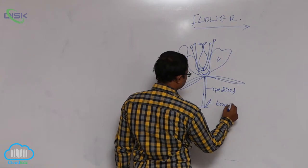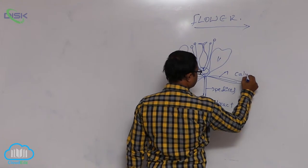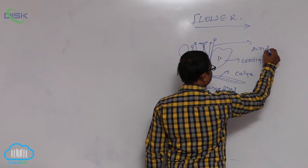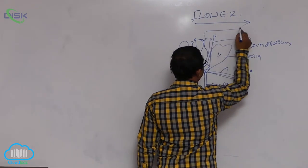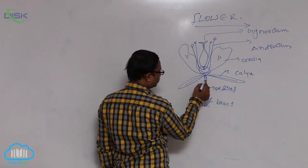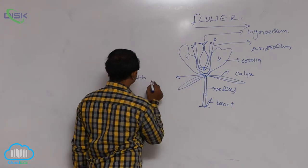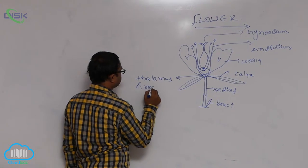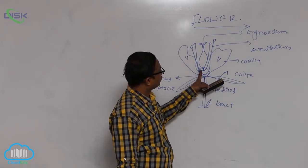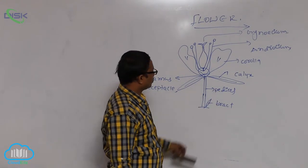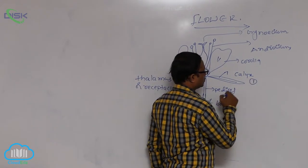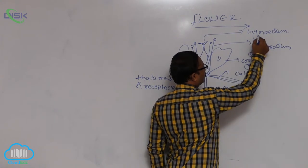In the diagram, we can see the bract, peduncle, calyx, corolla, androecium, and gynoecium parts. The tip of the peduncle becomes swollen and is known as the thalamus or receptacle. On the thalamus, modified leaves are present at different nodes, known as floral leaves. Four kinds of floral leaves are formed at four nodes: calyx, corolla, androecium, and gynoecium.